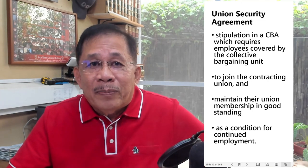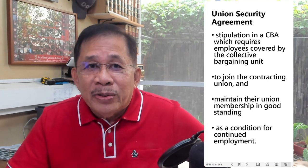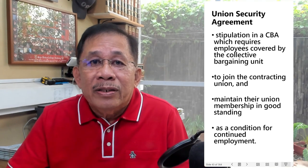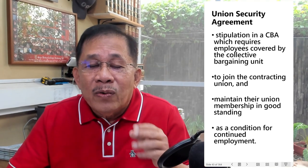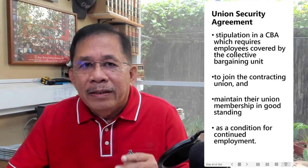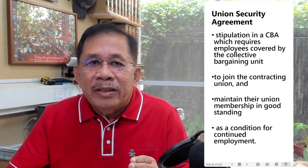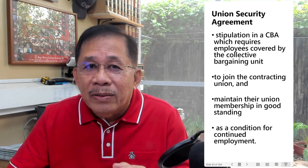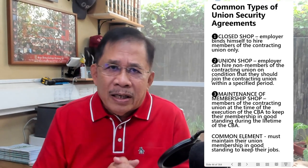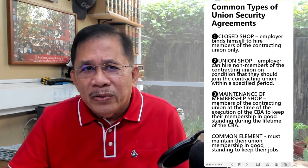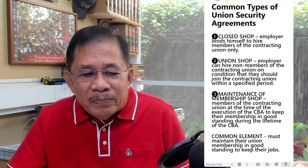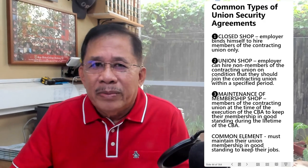So how is the union secured by the union security agreement? The union security agreement requires employees to join the union and to maintain their membership in good standing as a condition for continued employment. The common types of union security agreements are closed shop, union shop, and maintenance of membership shop.